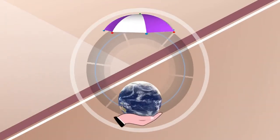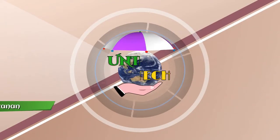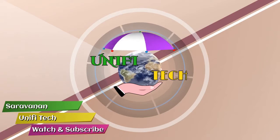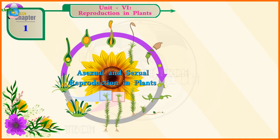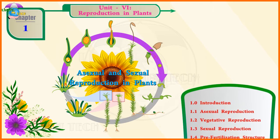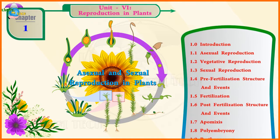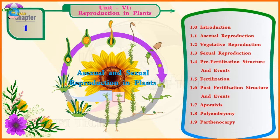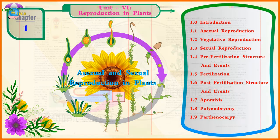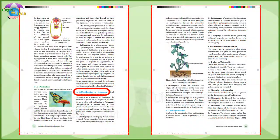Hi friends, I am your Sarumanan. This is your Unified Tech. Chapter 1, Unit 6: Reproduction in Plants — Asexual and Sexual Reproduction in Plants, Self-Pollination or Autogamy.